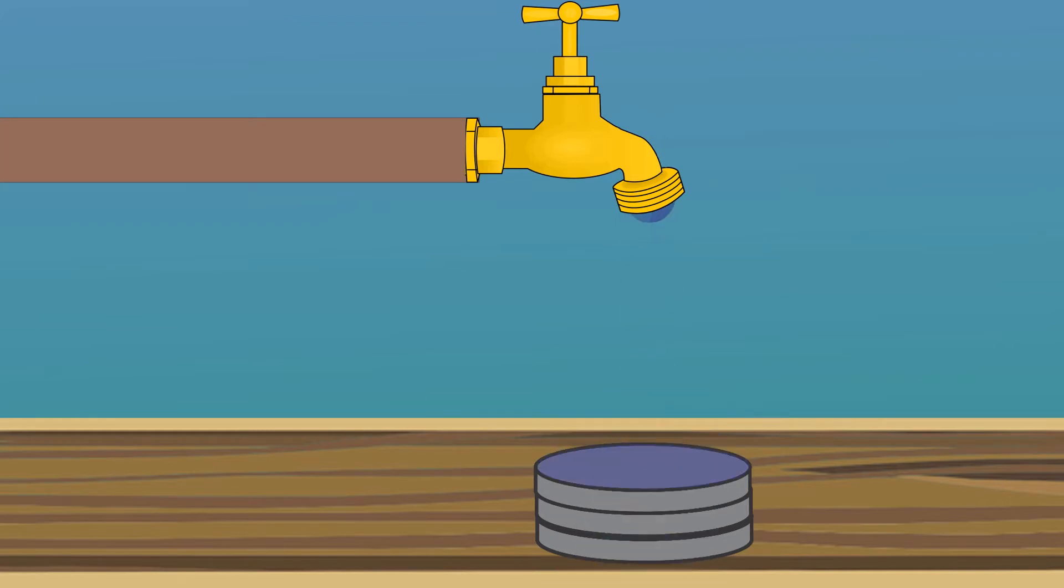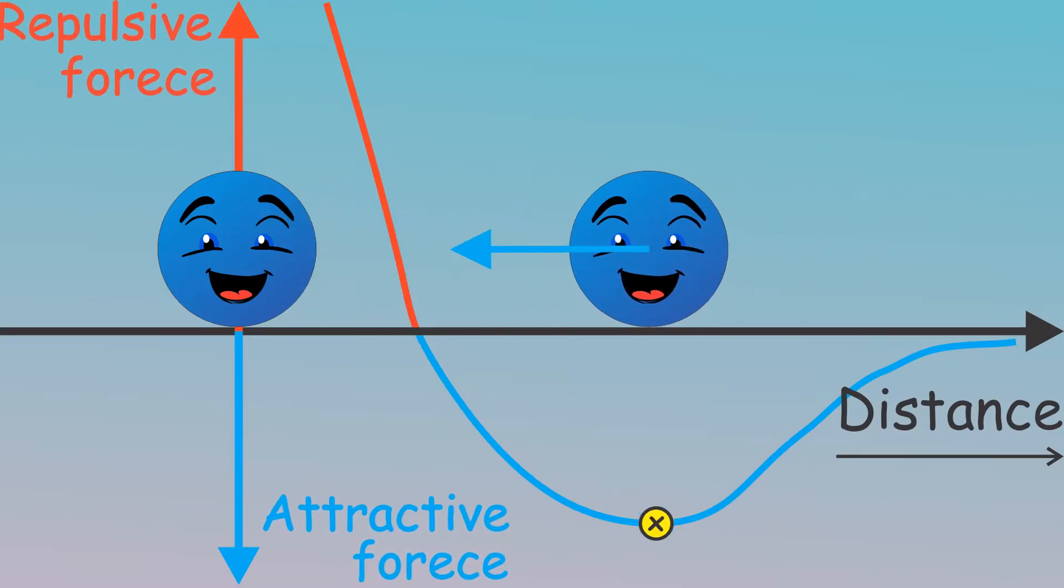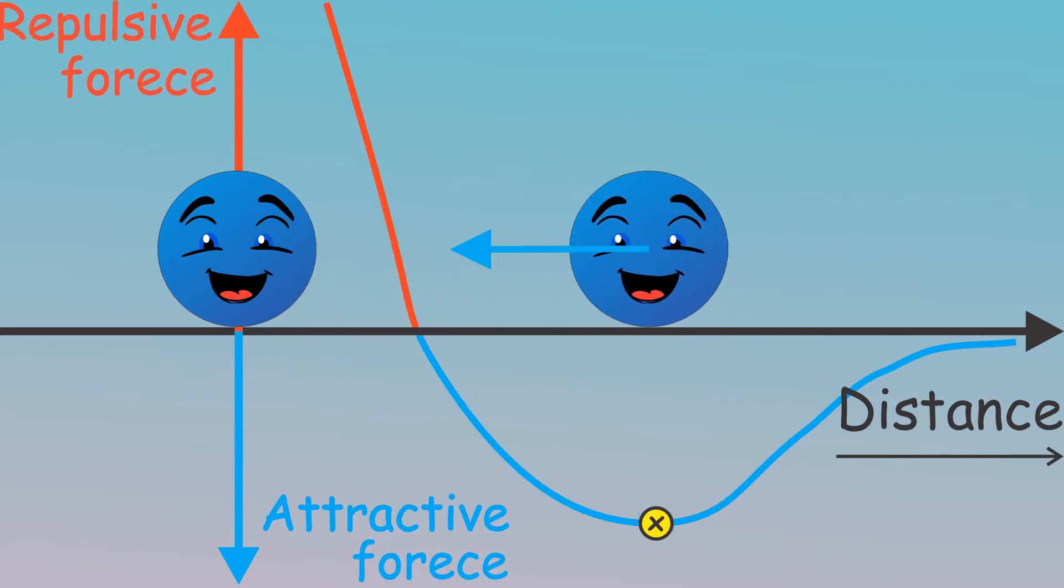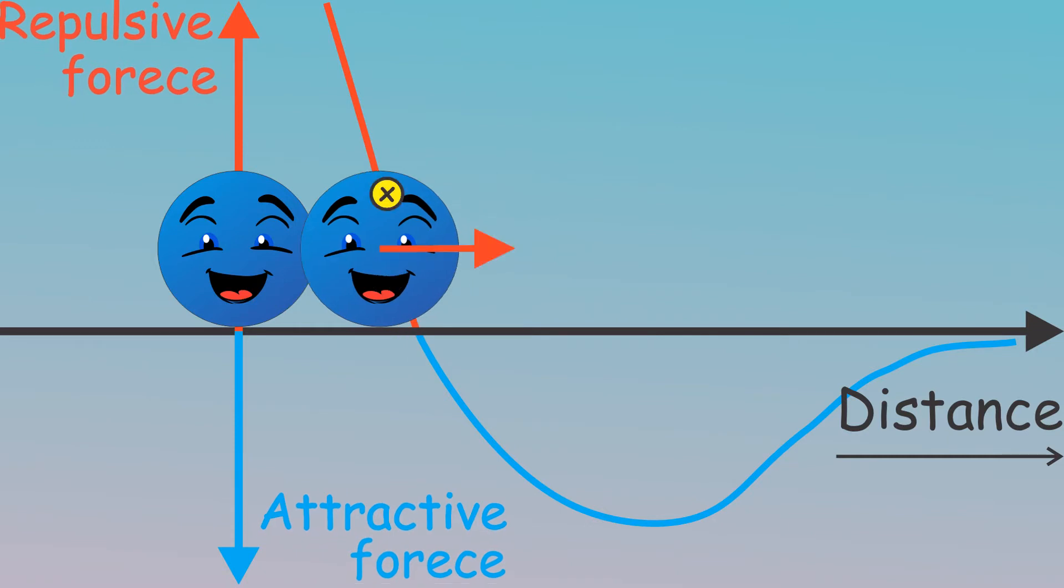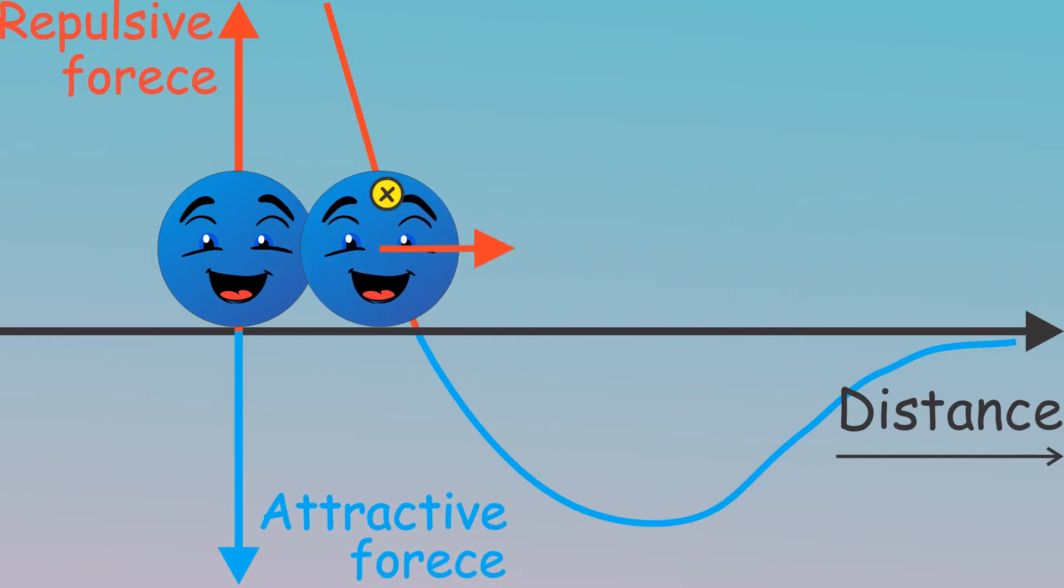But why is the water surface under tension? Let's find out. In liquids exist two sorts of forces: an attractive force and a repulsive force. The repulsive force affects the molecules on a shorter distance and so avoids that the molecules come too close.